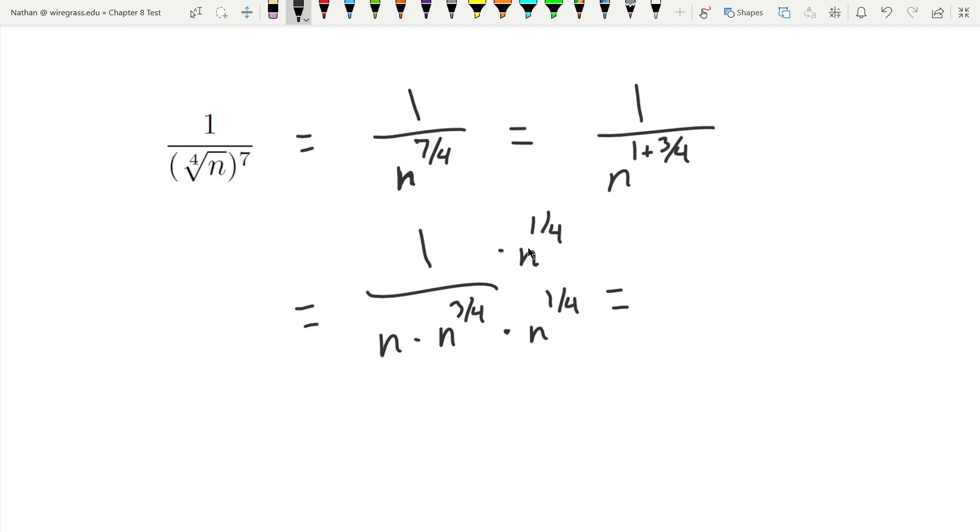Okay, now I have n to the 1 fourth power. That's the same thing as the 4th root of n. In the denominator, I have 3 fourths times 1 fourth, or this can be plus, because you multiply like bases, you add the exponents. So 3 fourths plus 1 fourth is 1. I have n times n, but that's just n squared. And so this is a rationalized denominator.